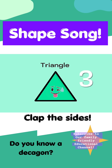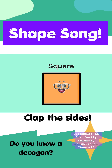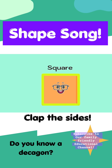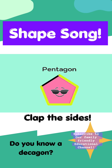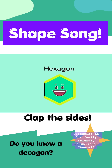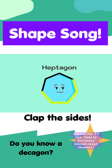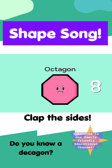A triangle has three sides. A square has four sides. A pentagon has five sides. A hexagon has six sides. A heptagon has seven sides. An octagon has eight sides.